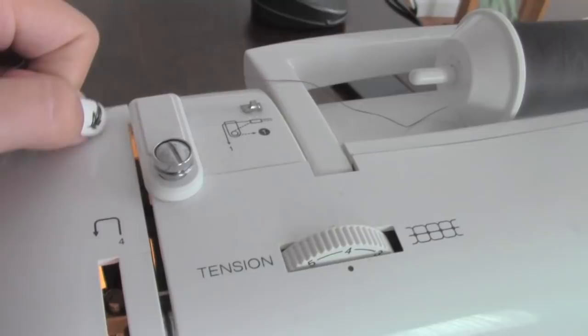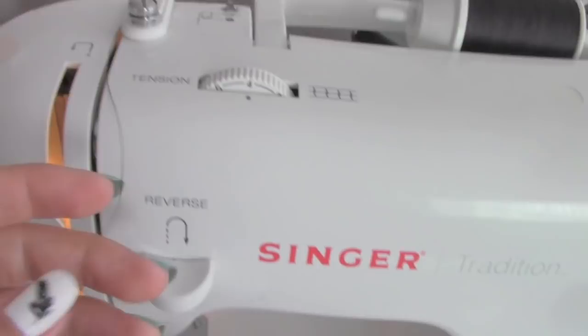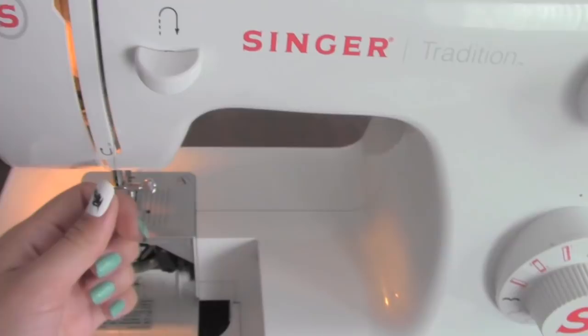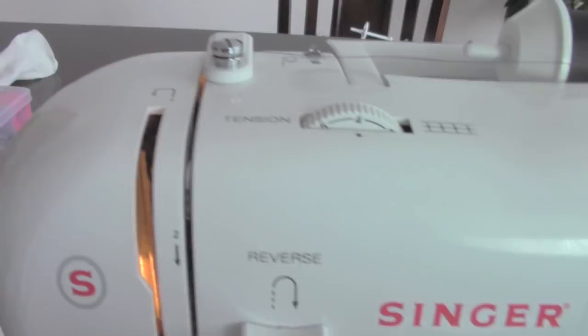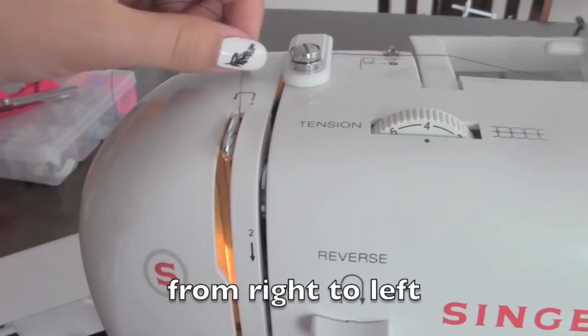Take the thread out of the bobbin thread guide and place it on the upper thread guide. Now place the string right down this slit and place it up to the upper thread guide.